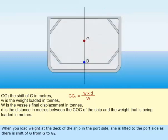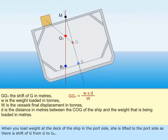When you load weight at the deck of the ship in the port side, she is listed to the port side as there is a shift of G from G to G1.